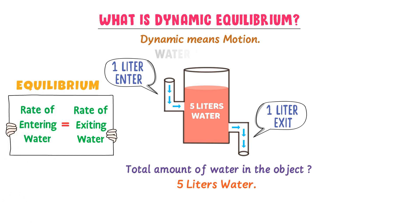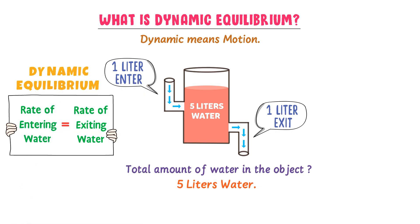We know that water is constantly moving. So for the motion of water, we use the word dynamic. So this system is an example of dynamic equilibrium, where water enters and exits from the system, but the total amount of water remains the same.